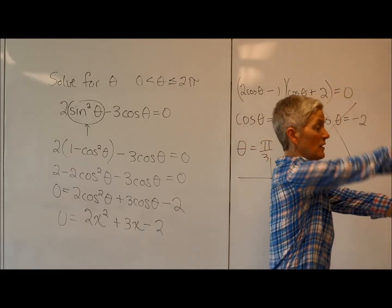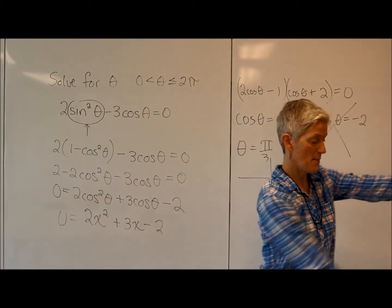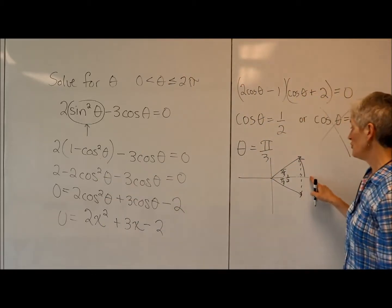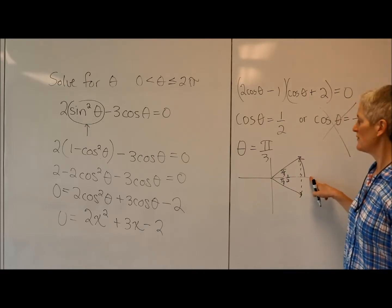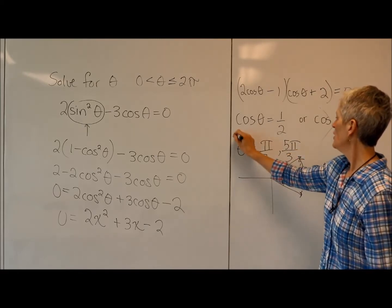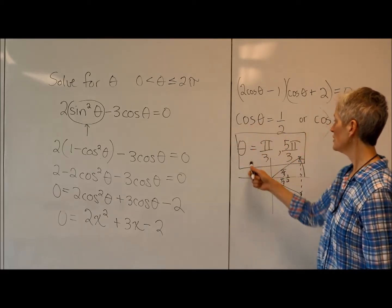And the second solution is 2π minus π over 3, which, let's see, 2π would be 6π over 3, so minus π over 3 would be 5π over 3. So those would be my two solutions.